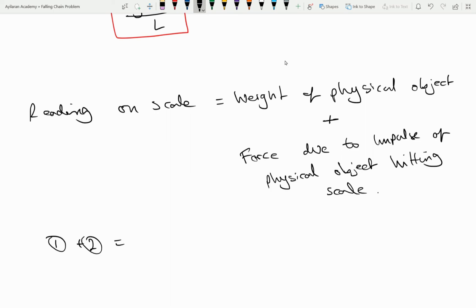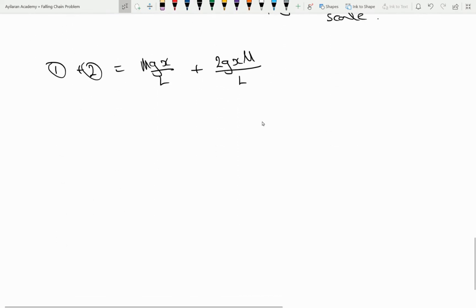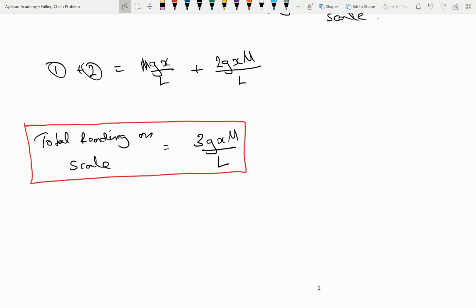The first expression was the weight of the chains on the pan which was simply M G X over L. The second expression was the change of impulse which is also a force of the chain on the pan which is 2 G X M over L. And the total reading from these additions, the total reading on the pan scale is at the end going to be 3 G X M over L. So I hope you've enjoyed following through the solution of this problem using fundamental mechanical principles.